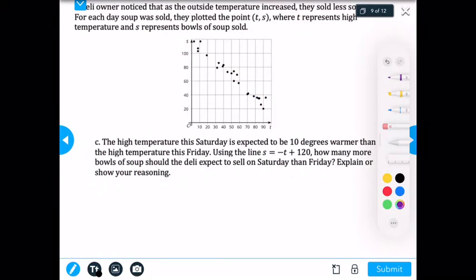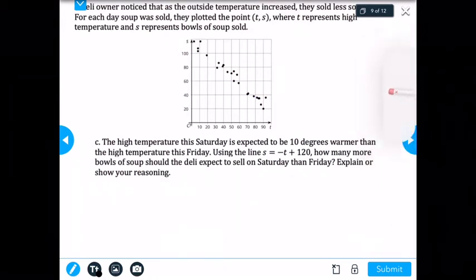And now we have one final problem. It says, the high temperature this Saturday is expected to be 10 degrees warmer than the high temperature this Friday. Using the line S = -T + 120, how many more bowls of soup should the deli expect to sell on Saturday than Friday? Explain or show your reasoning.